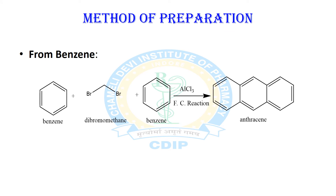The second method is from benzene. When we take a 2:1 ratio of benzene and dry dichloromethane, again in the presence of a Lewis acid like AlCl3, it undergoes a Friedel-Crafts type reaction. Then the coupling of this moiety occurs, 3 rings form via cyclization, and it results in anthracene formation.